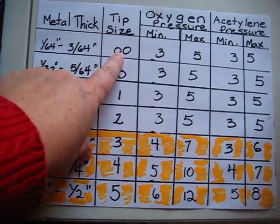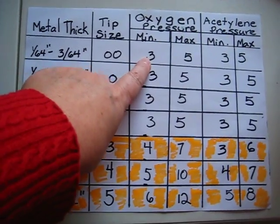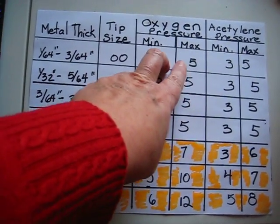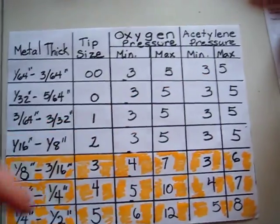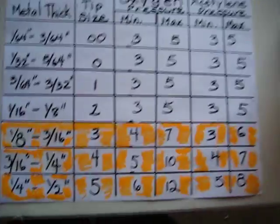This is a double tip, and it's set at 3 and 5 for minimum, maximum, and 3 and 5 for minimum, maximum of the acetylene pressure.